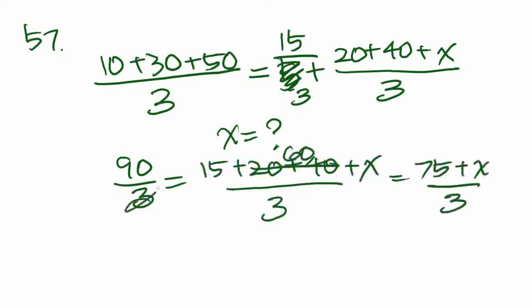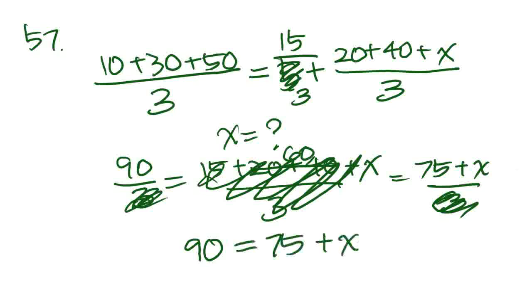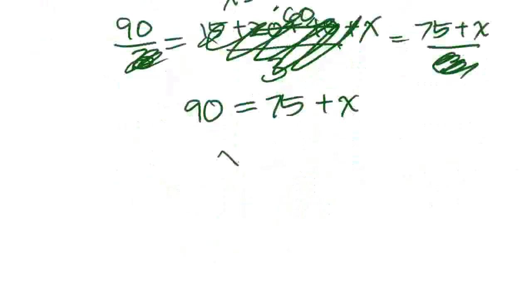We can get rid of the 3s. And we're left with 90 equals 75 plus x. x equals 90 minus 75. And that gets us our answer, which is yes, x equals 15. And that is answer choice A.